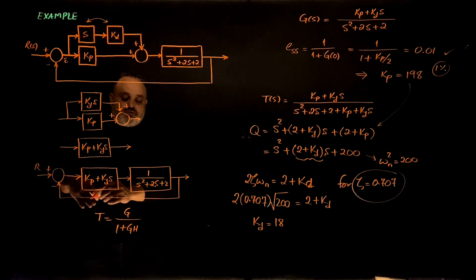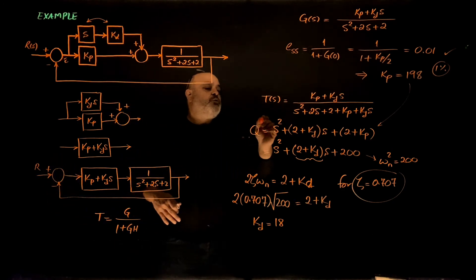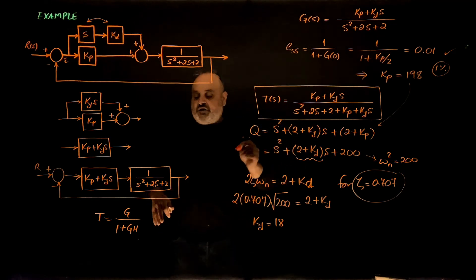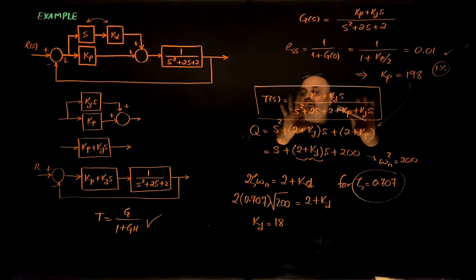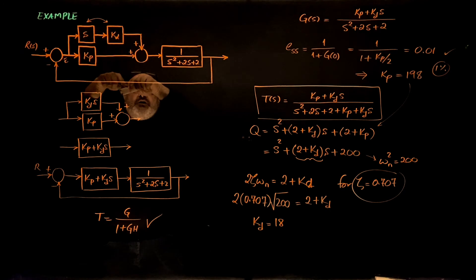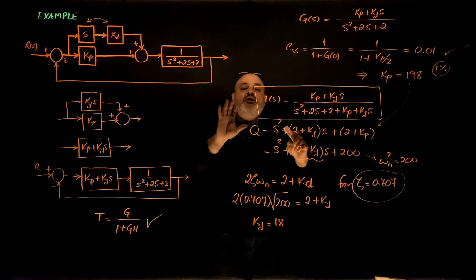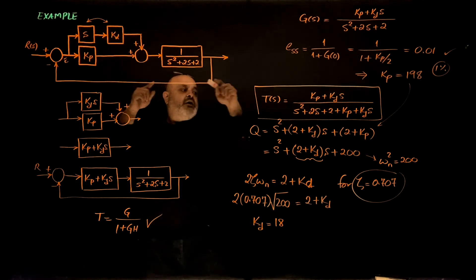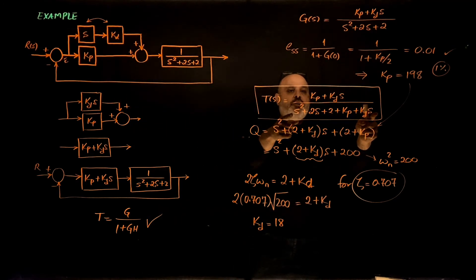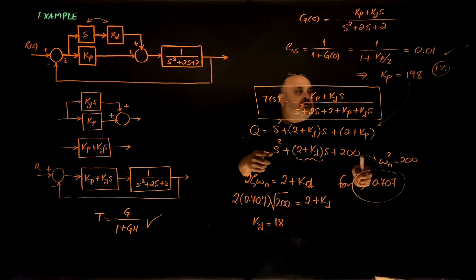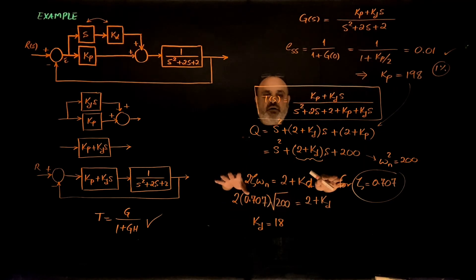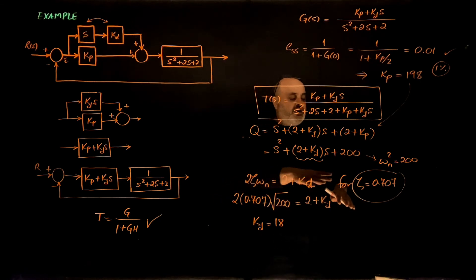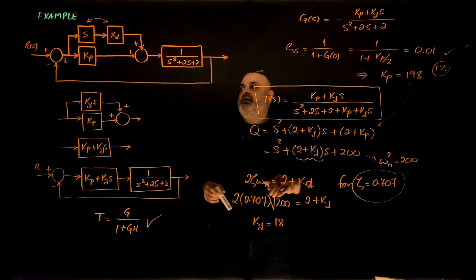To determine the characteristics of the complete system, we reduce it to a single transfer function using block diagram reduction. The performance depends on the poles of this transfer function, or the roots of the characteristic equation. Using the steady-state error requirement, I determined Kp, and now I can freely choose Kd to control the amount of damping according to my design requirements.